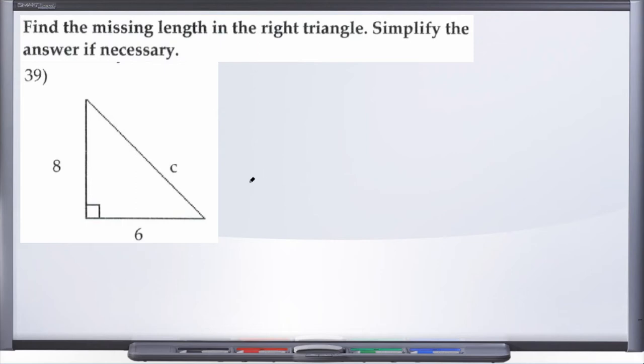Alright, so with problem 39 here, we are to find the missing length in the right triangle and simplify the answer if necessary. We have been given a right triangle and we've been given two sides.